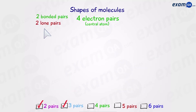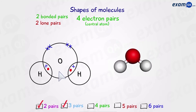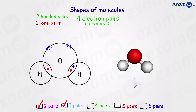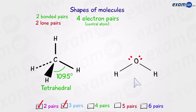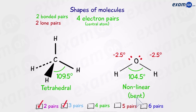The final example in the four electron pairs category is a molecule with two bonded pairs and two lone pairs — for example, water. Comparing to methane with four bonded pairs at 109.5 degrees, and subtracting 2.5 degrees for each lone pair, we get 109.5 minus two lots of 2.5, giving 104.5 degrees. The name for this shape is non-linear, sometimes referred to as bent.